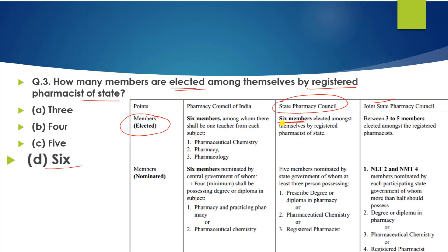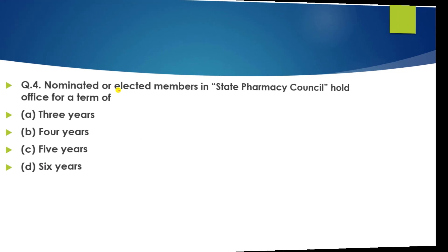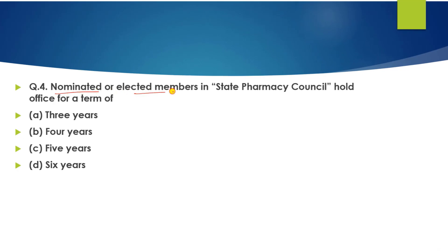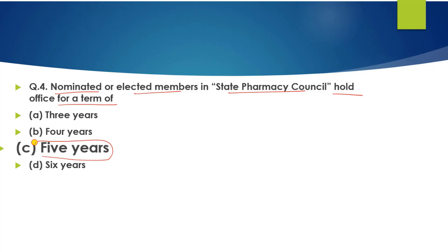Question number 4: Nominated or elected members of the State Pharmacy Council hold office for a term of how long? The answer is five years. Generally you can see in India that elections are held, and the office term here is five years.